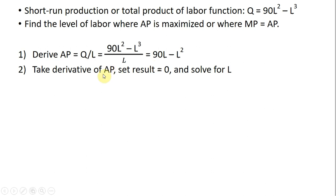The next step is to take the derivative of average product and set the result equal to 0, and after we do that we'll solve for L. We're trying to find where average product is maximized, so calculus tells us to get the slope function, which is the derivative, and set that slope function equal to 0. When slope is equal to 0, we'll be on top of the hill — which, in this case, is the average product of labor function.